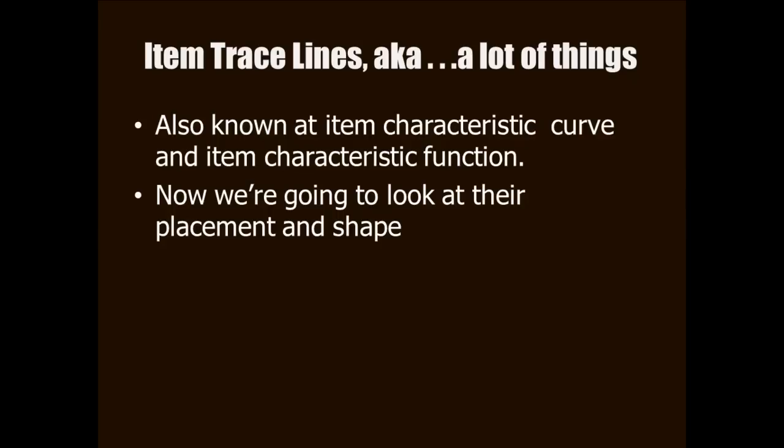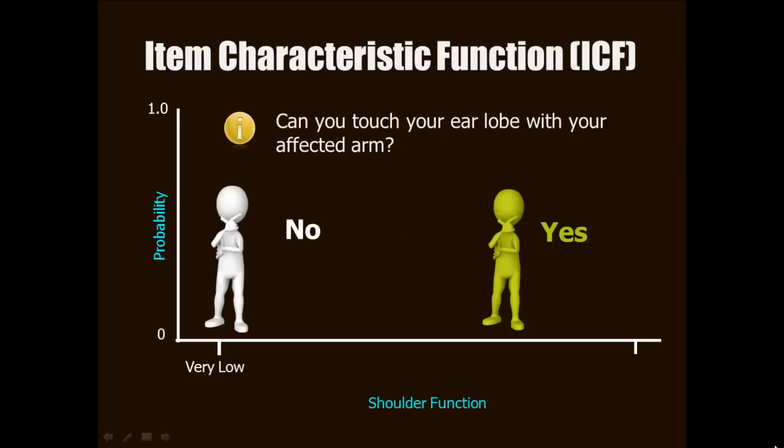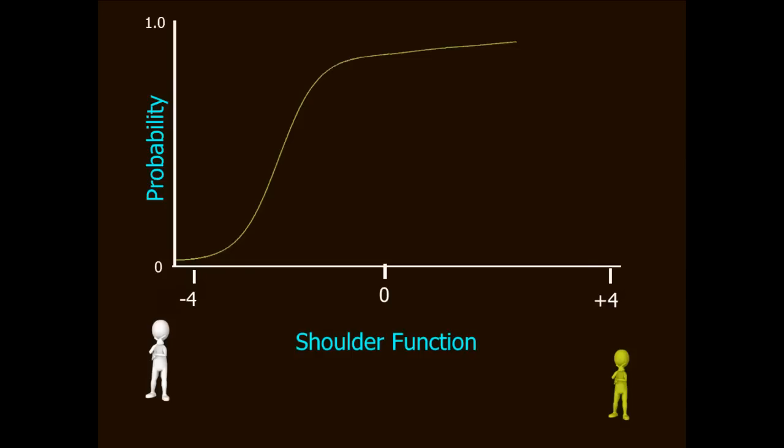In the next few slides, we're going to take a look at how item discrimination and item difficulty impact the shape of the traceline. Slash item characteristic curve, slash, slash item characteristic function, slash ICC, slash ICF. Remember this item from part three? It's the shoulder function item. Can you touch your earlobe with your affected arm? Recall that the natural unit in IRT is the logit, and those logits typically range from around minus four to plus four.